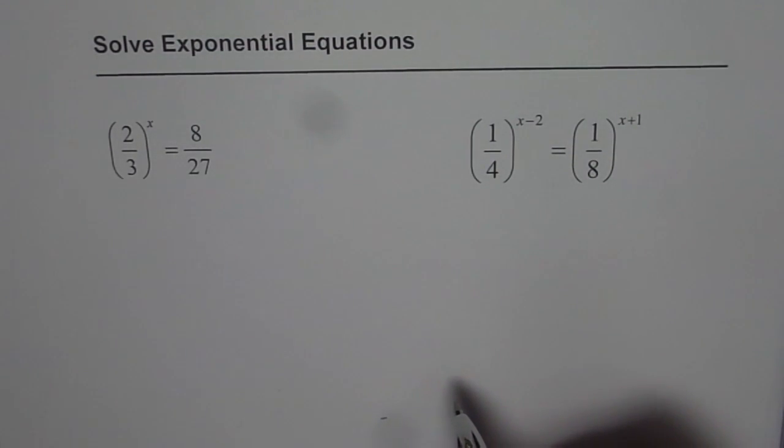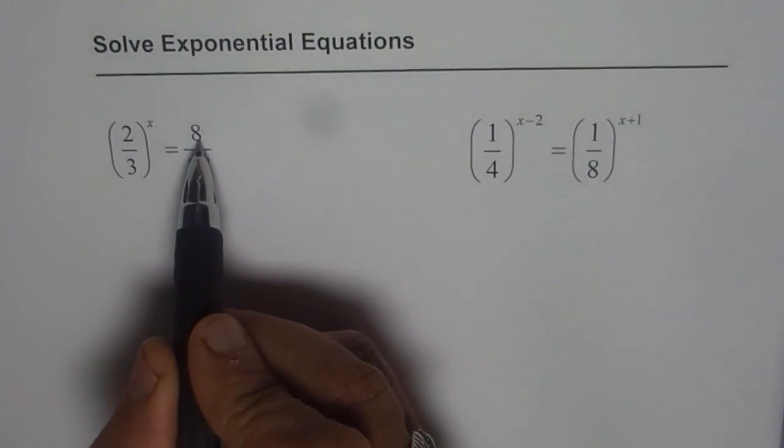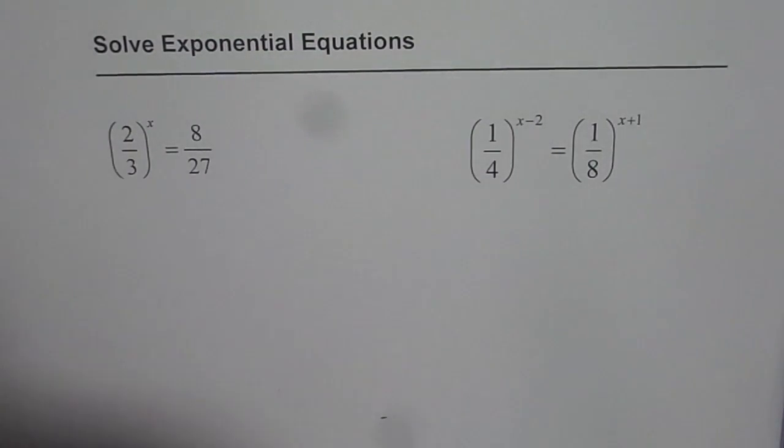Whenever you are solving exponential equations, you should have the same base. Now, in this case, numerator is 2, denominator is 3. We can have 8 as 2 to the power of 3 and 27 as 3 to the power of 3.